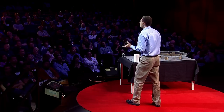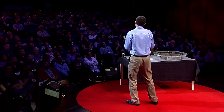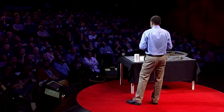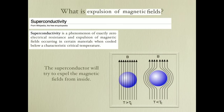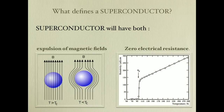Superconductors don't like magnetic fields. A superconductor will try to expel magnetic fields from the inside, and it has the means to do that by circulating currents. The combination of both effects — the expulsion of magnetic fields and zero electrical resistance — is exactly what defines a superconductor.